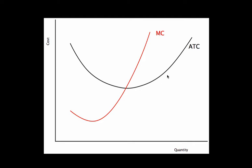This is going to be my representative firm. This ATC curve that we're looking at is for a given fixed input — some fixed size factory or whatever our fixed input is. So this is our short run ATC curve, and we're usually going to be concerned with what's going on in the short run with this firm.